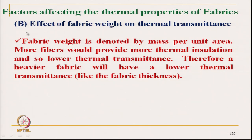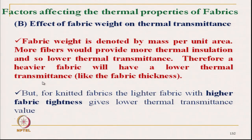Another parameter is the weight of fabric, denoted by mass per unit area. As mass per unit area increases, it provides more material, so higher mass per unit area normally gives higher fabric insulation and lower thermal transmittance. This is similar to fabric thickness, but there are other aspects also.